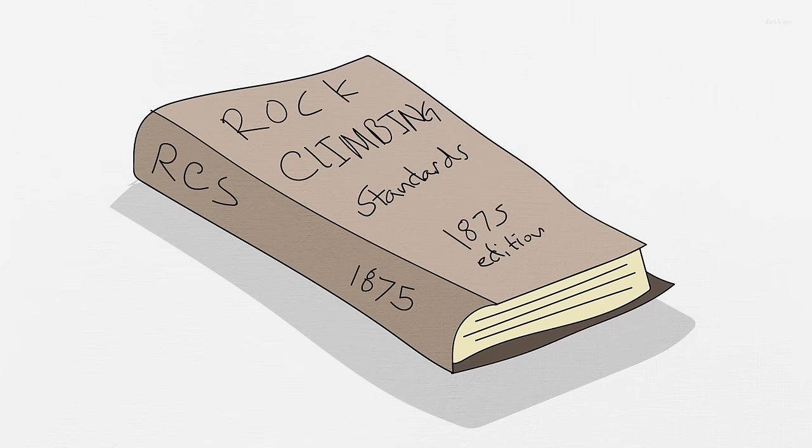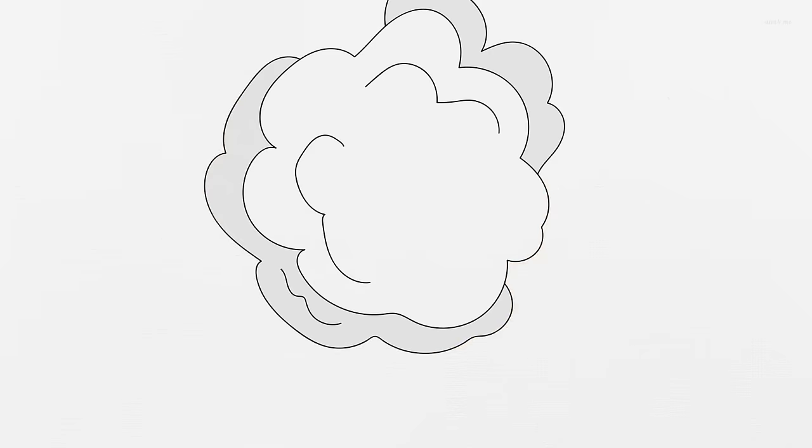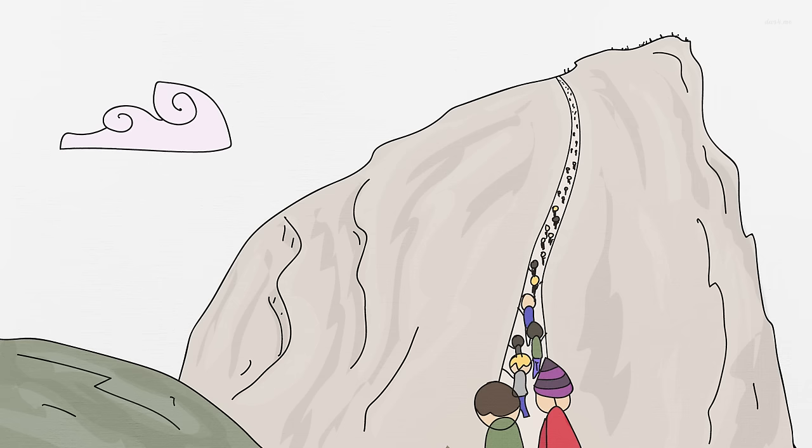Back then, the standards of rock climbing were not all that well defined. In fact, in 1919, the National Park Service installed fixed bolts and cables near Anderson's original route to allow tourists to climb up Half Dome.